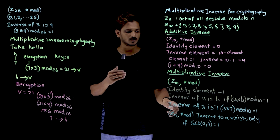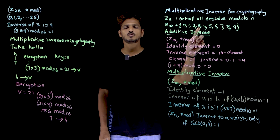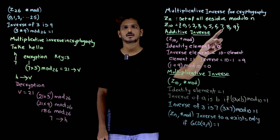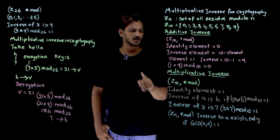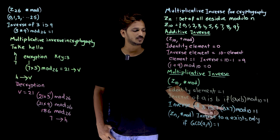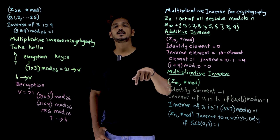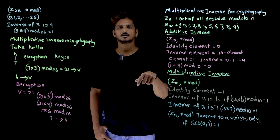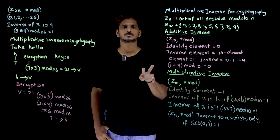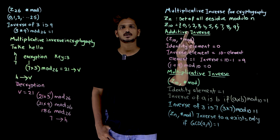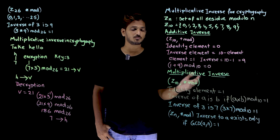Similarly, if you want to identify the inverse element, the inverse of 3 is 7. If you take element 3, its inverse element is 7 because 3 multiplied by 7 is 21, and 21 modulus 10 equals 1. So 3 and 7 are inverse elements because 3 × 7 mod 10 = 1, which gives the identity element. That is the multiplicative inverse.